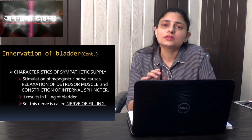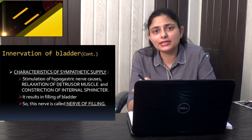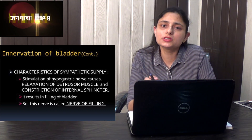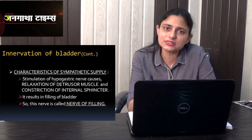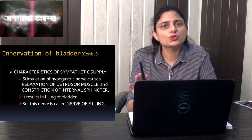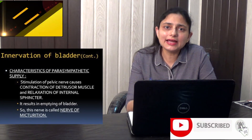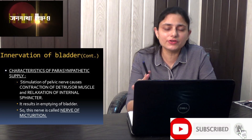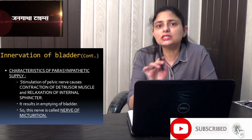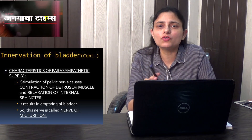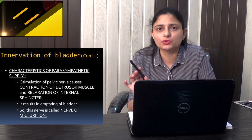The hypogastric nerve allows the urinary bladder to fill because the internal urethral sphincter is closed and the detrusor muscle is relaxed. On the other hand, the pelvic nerve gives a parasympathetic nerve supply to the bladder. This pelvic nerve is called the nerve of micturition and is responsible for the outflow of urine.